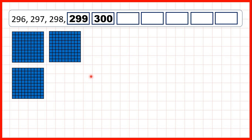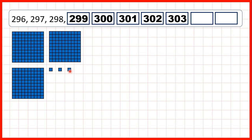So if we continue counting in 1s, we get 301, 302, 303, 304, 305.